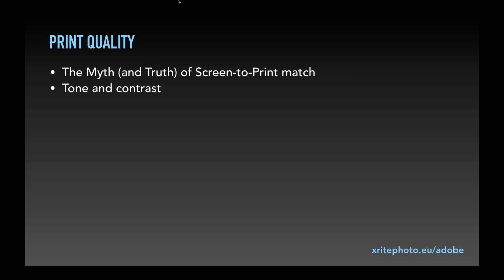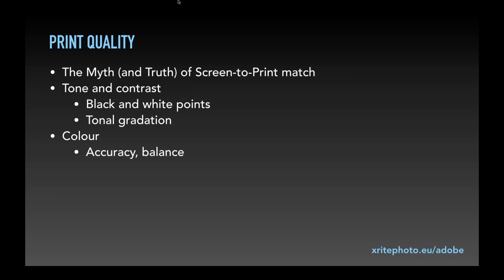What you can do is set up systems where your screen shows the best possible approximation to what the print might look like. You can also train your eye to understand what you're seeing. With print quality, the main issues are tone and contrast — tone meaning brightness levels from black to white, and contrast being the varying shades of gray. When someone says their print is too dark, that's typically a tone problem. Color issues — like a color cast — are a separate matter.